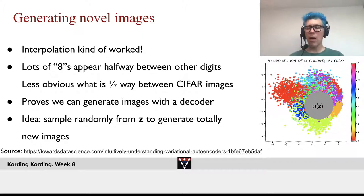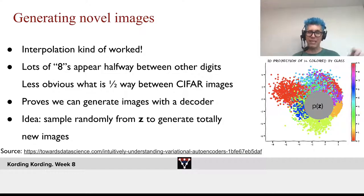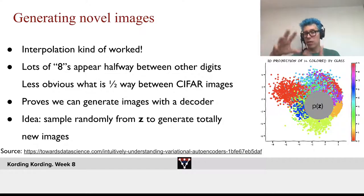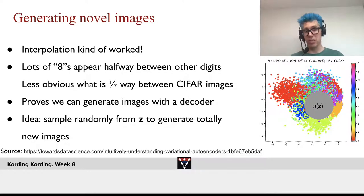Now, how would we generate samples? Well, we can say, let's take Z randomly from that plane, maybe according to a Gaussian distribution, to generate totally new images.